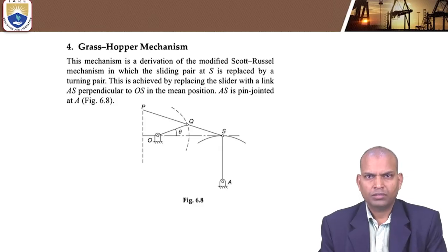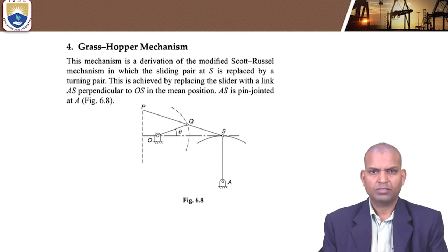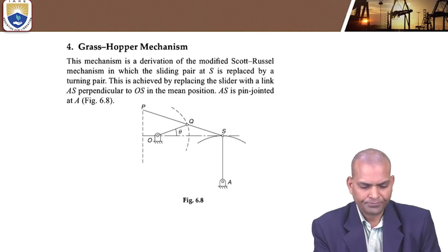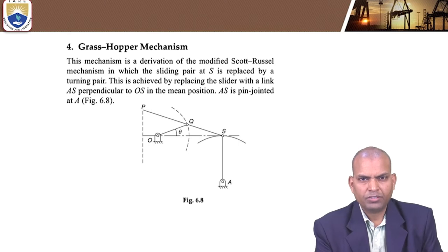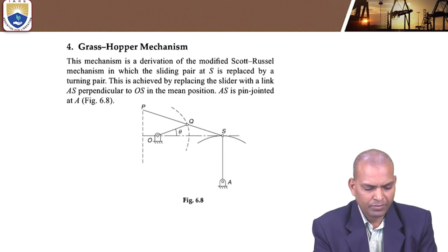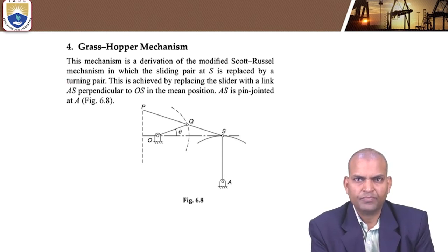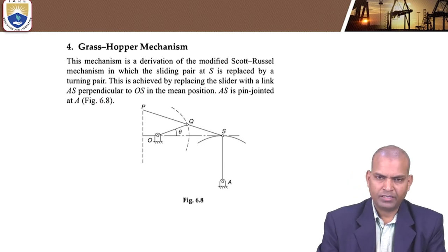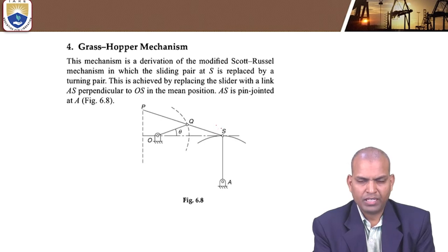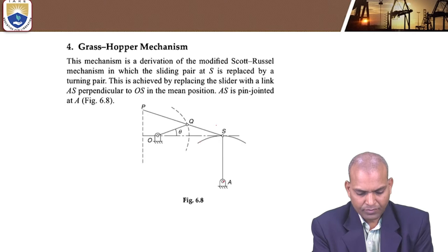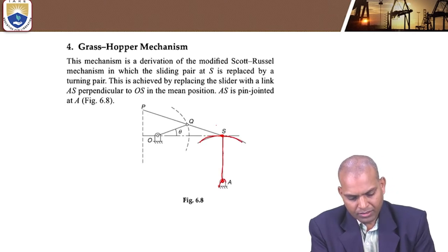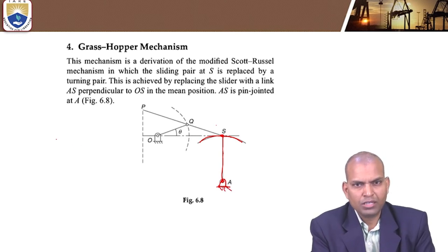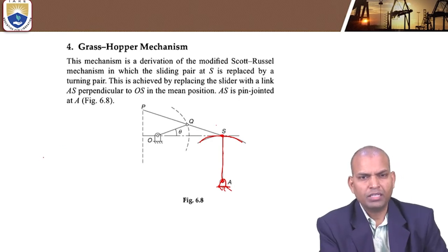The modified Scott Russell mechanism is also known as the grasshopper mechanism. This mechanism is a modified version of the Scott Russell mechanism. In the Scott Russell mechanism, there is a sliding pair, and in the modified version, that sliding pair is replaced by a turning pair — that is why it is called the modified Scott Russell mechanism.